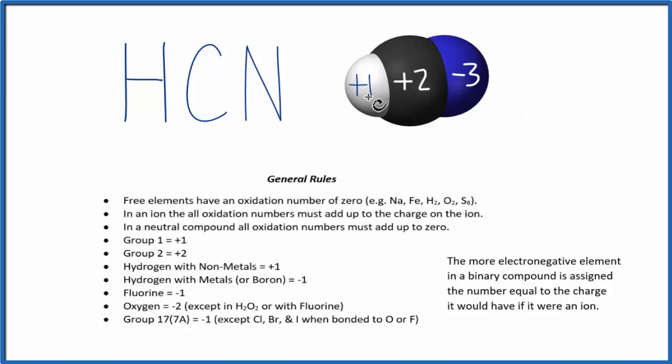To recap, we found the one we knew, and in this case, we took the more electronegative of the two, nitrogen, and used its ionic charge as the oxidation number. Based on that and the fact that this is a neutral compound where all oxidation numbers add up to zero, we could figure out the carbon.